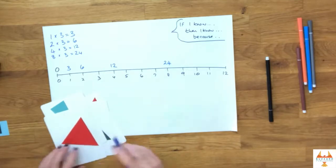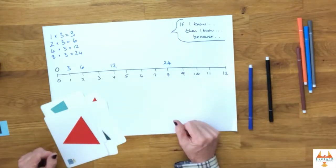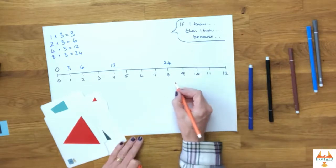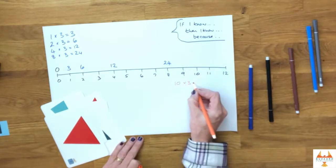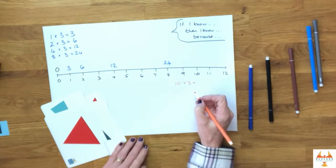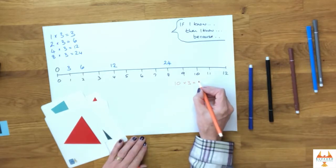I change colors then to think about another little family of facts. So we're now going to look at 10 times three. We're using my place value. If I know that three tens are 30, I know that 10 multiplied by three is 30.